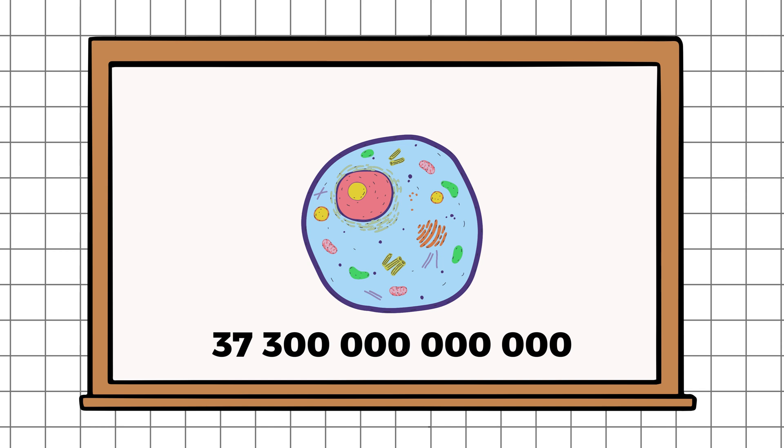At the heart of each cell lies the nucleus, its command center, often called the brain of the cell. This tiny yet powerful structure stores and protects the genetic instructions that guide every process, ensuring that life runs smoothly at the molecular level.